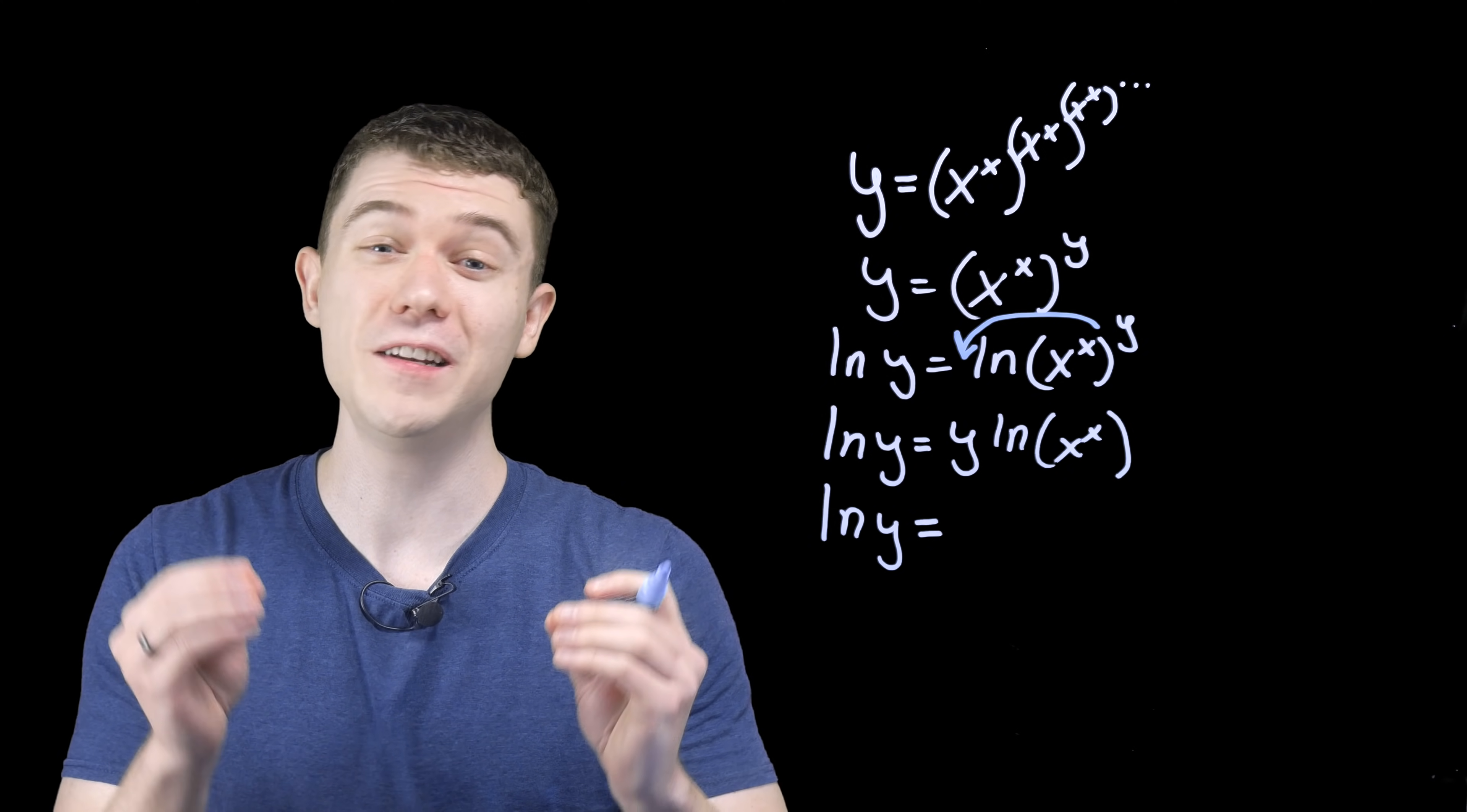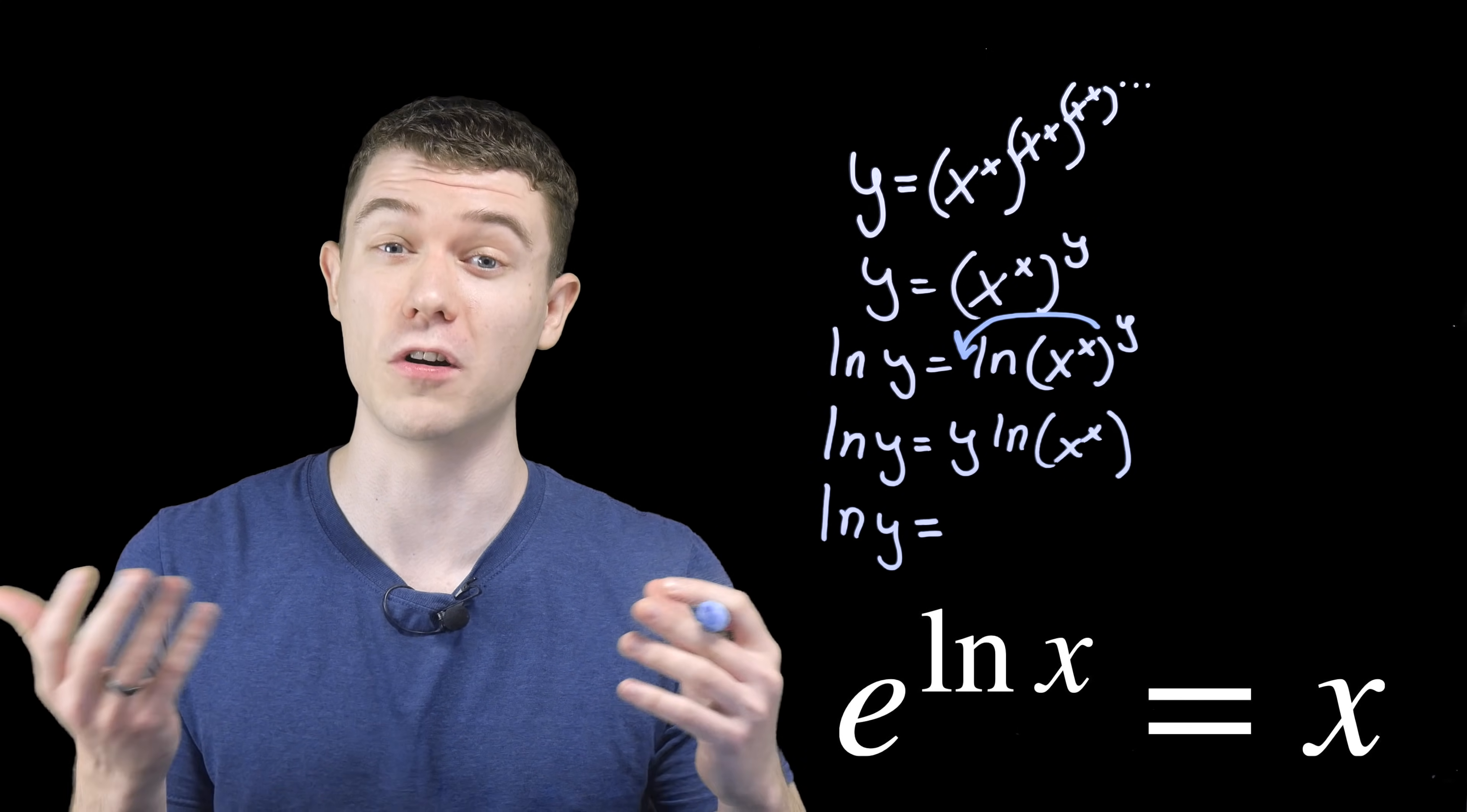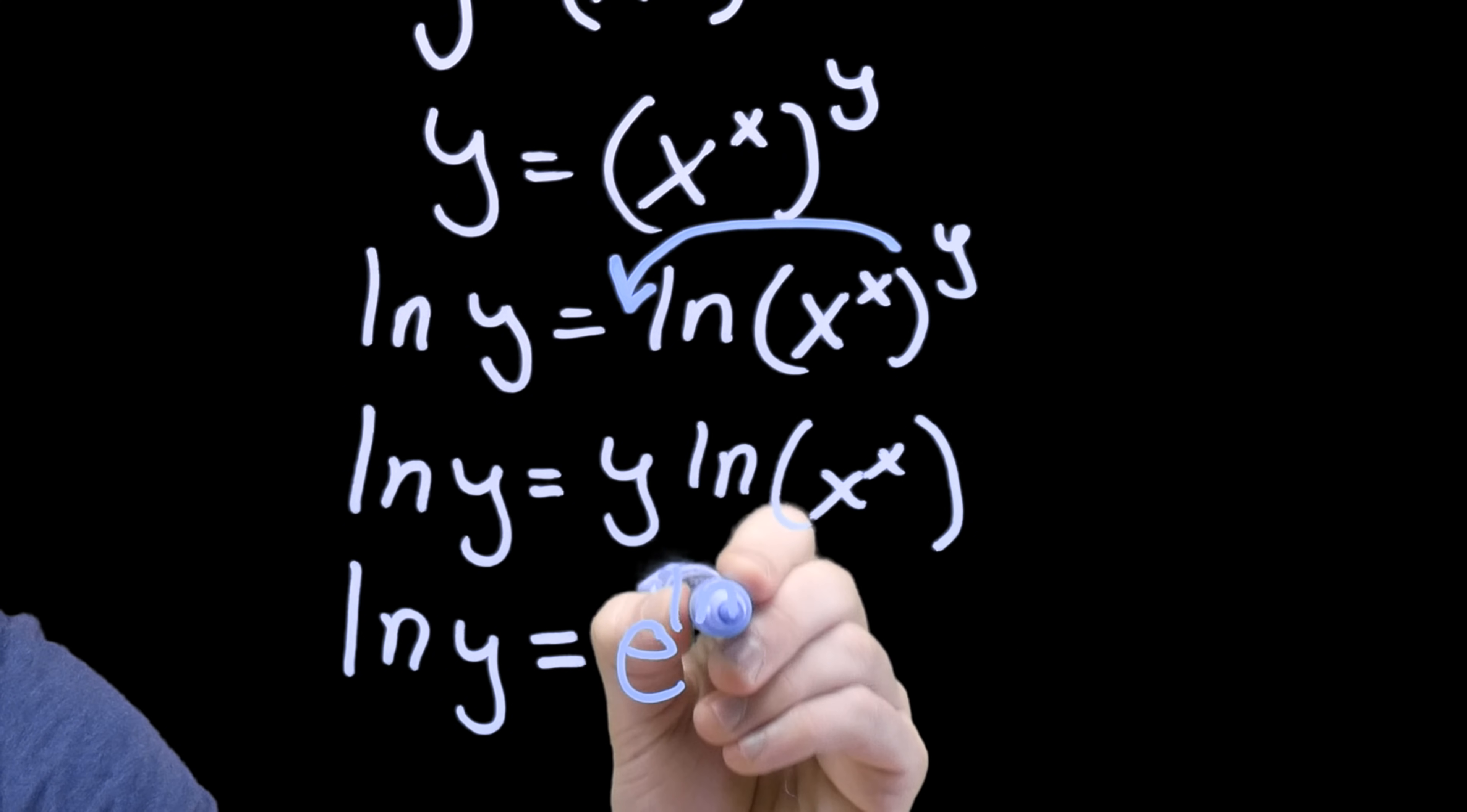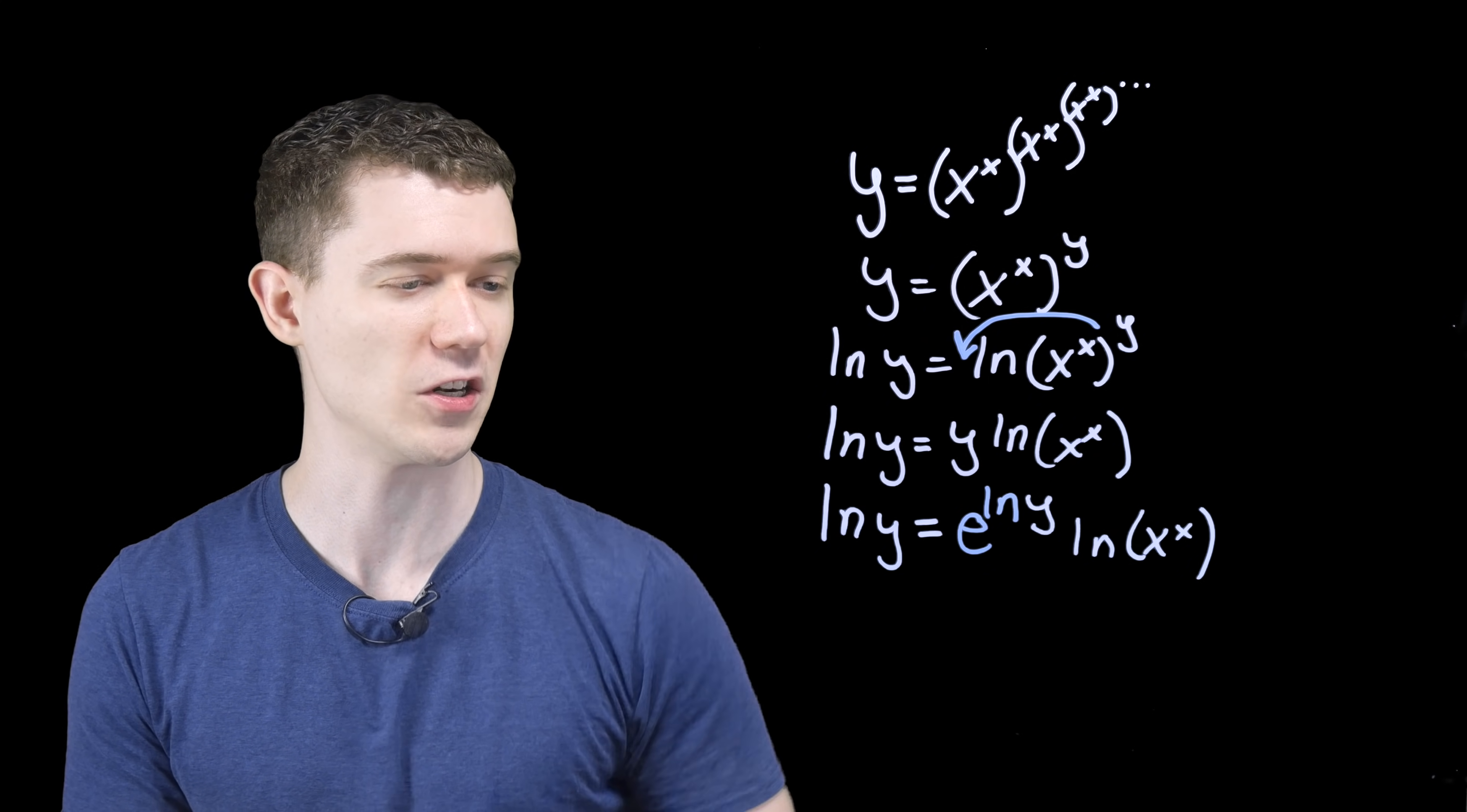And now, for seemingly no apparent reason, we'll insert an e to the ln. Remember that e and ln, the exponential function and the natural logarithmic function, are inverses of each other. They undo each other. So we can insert them. I'm just going to put an e to the ln right here around this y, and this is completely legal. Now, let's take this and divide both sides by this e to the natural log y term.